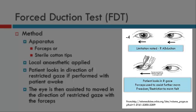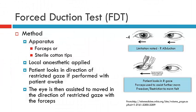As the patient looks into right gaze in this example, the eye will reach midline but will not move beyond midline. The clinician will then attempt to assist the movement of the eye into abduction using the forceps or sterile cotton tips. What you will feel is either a freedom of movement or a restriction, and it is this that determines whether you have a mechanical restriction or a neurogenic palsy. There are videos loaded as part of the playlist for this section so you can see what a free movement looks like compared to a restricted movement.